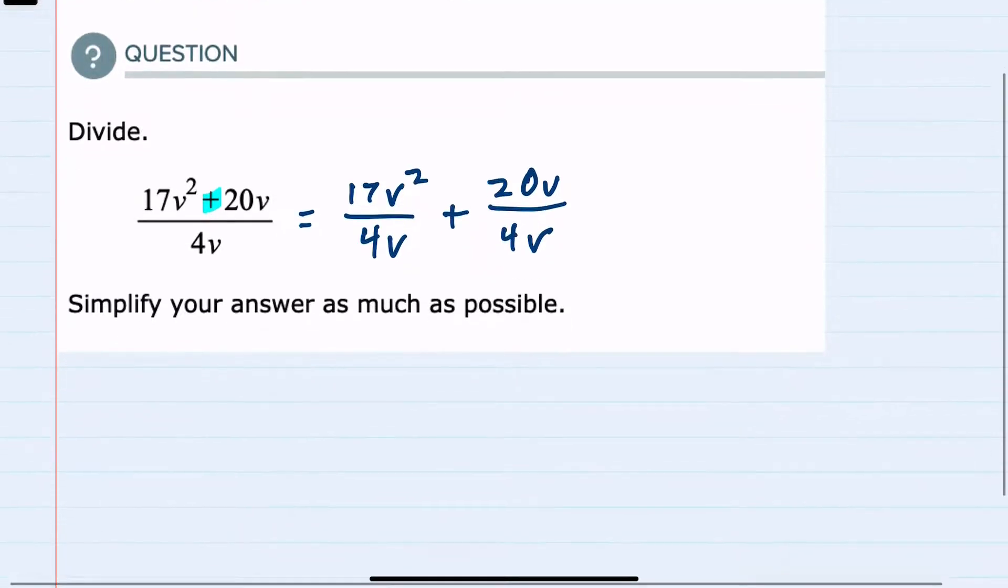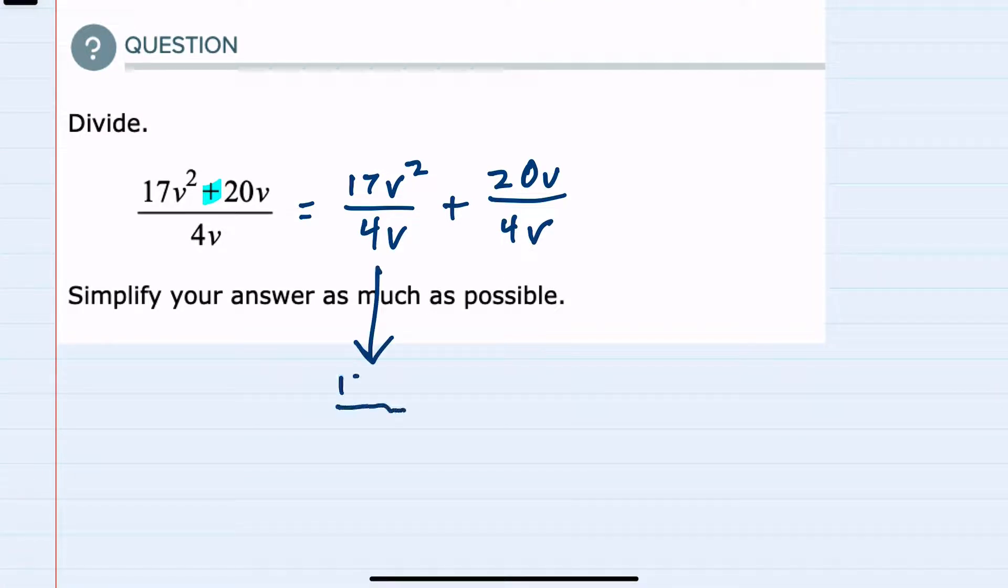So in this first term for the numbers we have 17 and 4 but they don't have a common factor that we could cancel, so we can just leave that as 17 over 4.